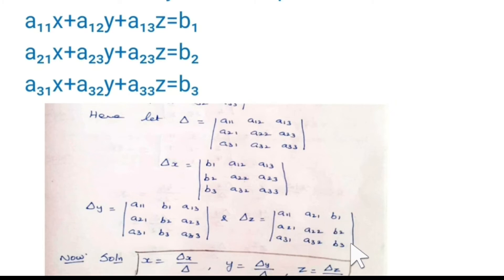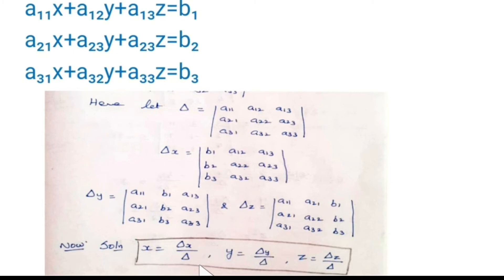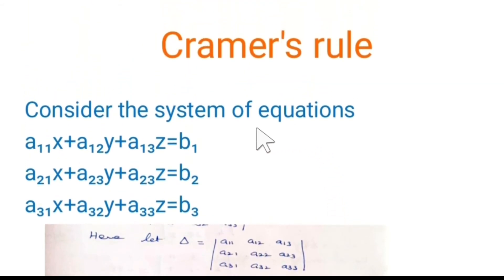For delta z, replace the third column by the constant terms B1, B2, B3, with the first and second columns the same. Calculate all the determinant values: delta, delta x, delta y, delta z. Then x equals delta x by delta, y equals delta y by delta, and z equals delta z by delta. This is the procedure for Cramer's rule — find all determinant values and calculate x, y, and z. This is the second method, Cramer's rule, to solve the system of linear equations.